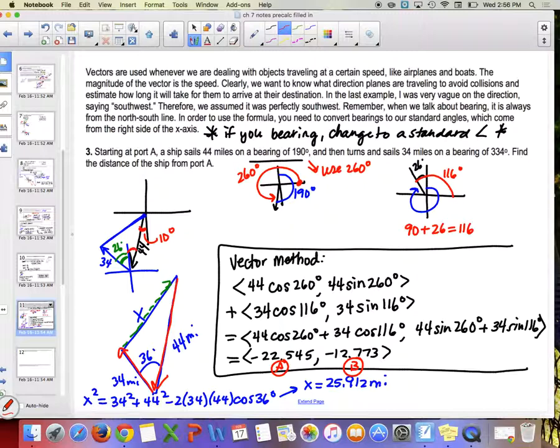And then if you do second enter you can quickly change things to sines for the second one: 44 sine of 260 plus 34 sine of 116, and we get negative 12.773 and I store that as B. The question is find the distance of the ship from port A, that's the component form of that resultant vector. How do I get the distance? The magnitude, right. So then find the magnitude, so you can just do A squared plus B squared under a square root. So we get 25.912. Is that what we had before? It is, it works both ways. Now that we know that vector method it's going to be a lot easier.